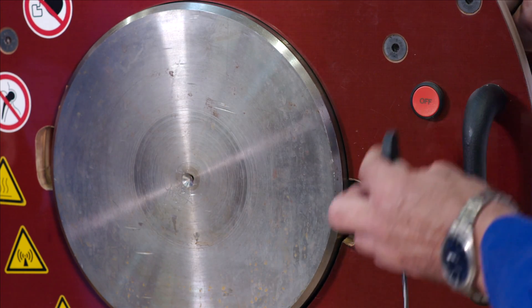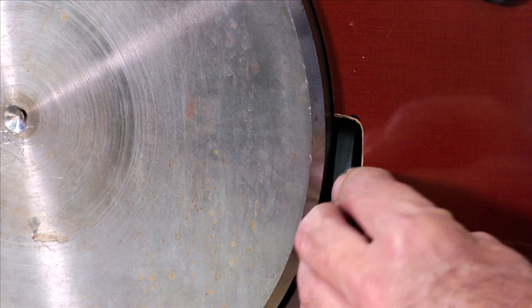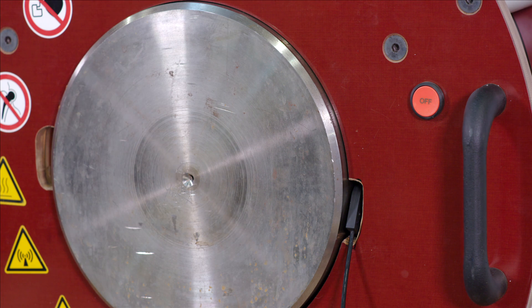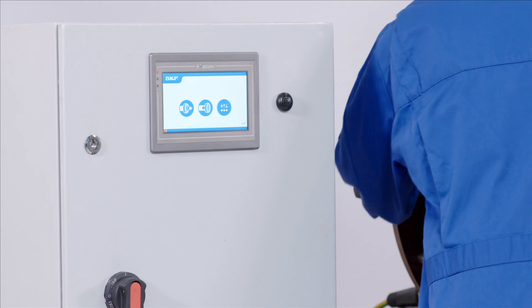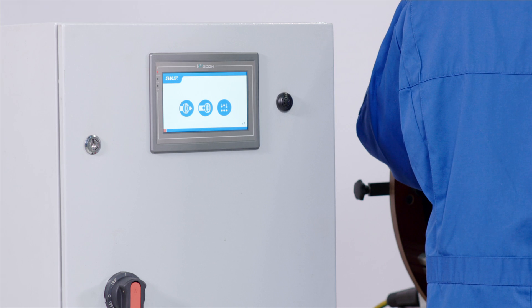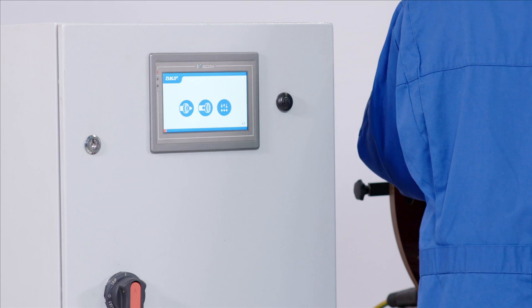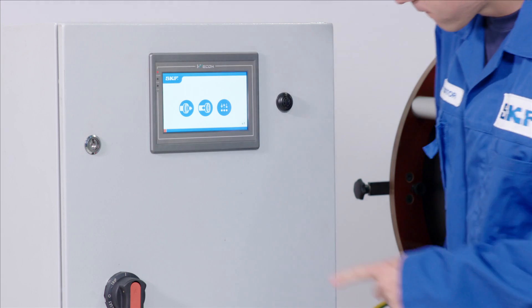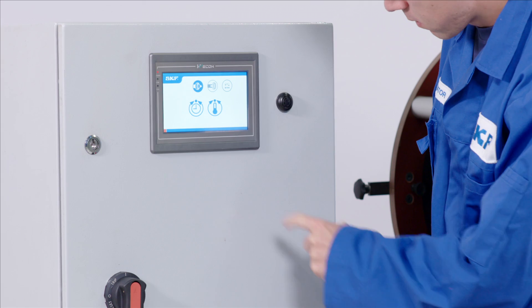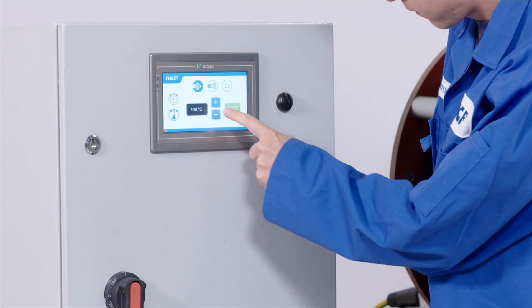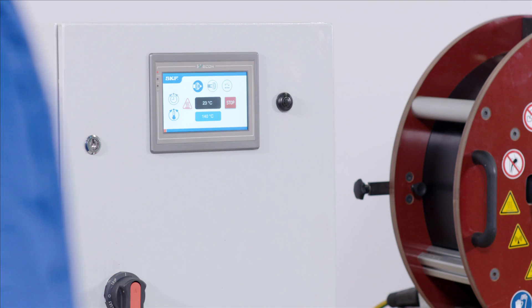Now position the temperature probe to measure the inner ring temperature or use a thermometer. On the first time using the heater, the heating time and temperature have to be determined. Press the dismount icon, then set the desired temperature, and push start to initiate the dismounting process.